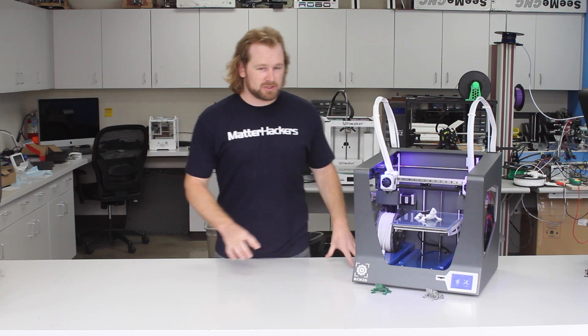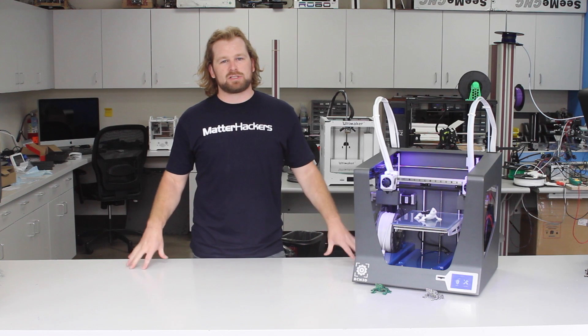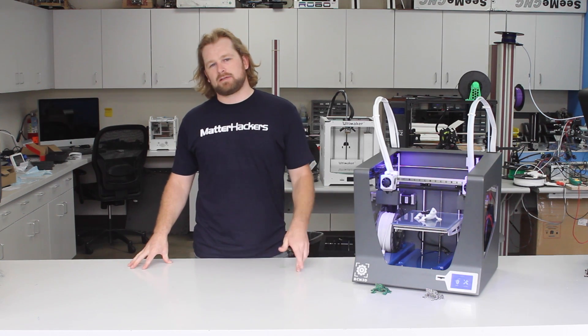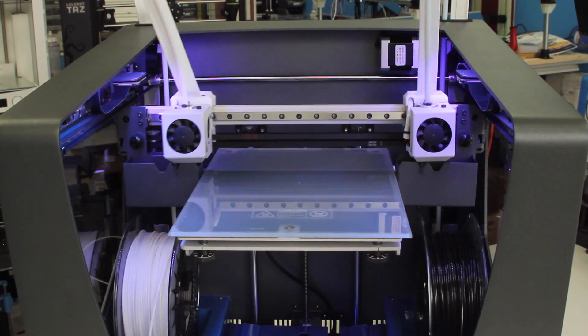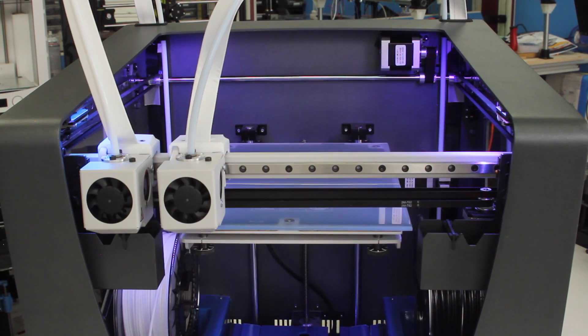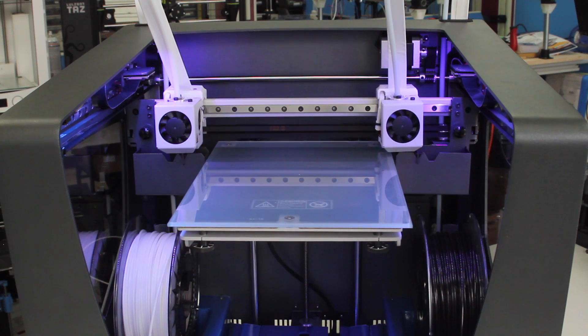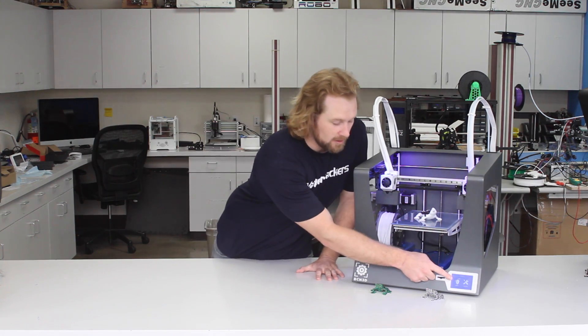The other cool thing about the BCN Sigma is the touchscreen. So the touchscreen allows you, it's got all the capabilities of most of the machines in the industry today. So printing from SD card, it's even got an auto bed calibration, which is really valuable, especially for the independent dual extruders. It goes through a calibration wizard automatically. That's all facilitated through this really nice touchscreen in the front panel right here.